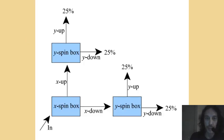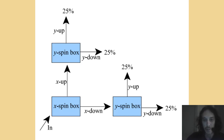This diagram illustrates what I was just saying. If you feed a bunch of electrons into the x-spin box, half will go out as x-spin up and half as x-spin down. If you feed the x-spin up electrons into a y-spin box, half will come out y-spin up and half y-spin down — irrespective of what state they were in before. Similarly, the x-spin down electrons, after being fed into a y-spin box, will also split equally into y-spin up and y-spin down.